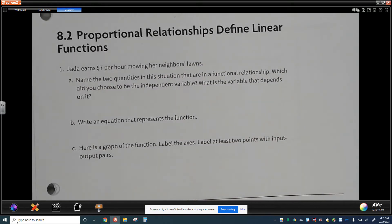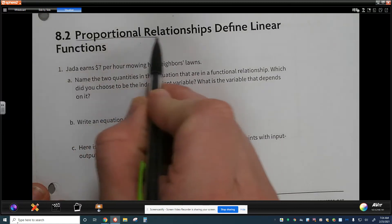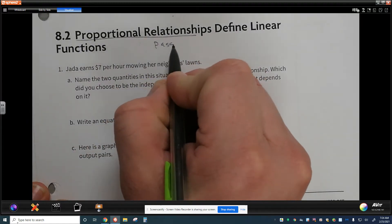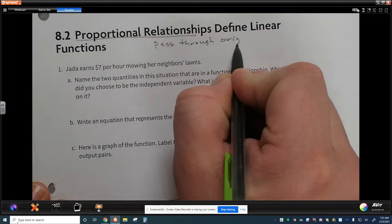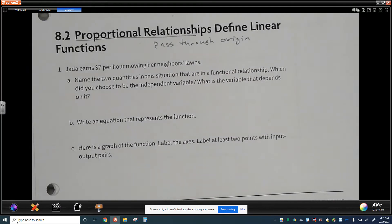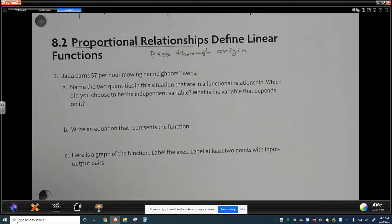8.2 is proportional relationships define linear functions. And what we're after, this is a key thing to look at, proportional relationships. So we recognize this piece that proportional relationships pass through the origin. And it's kind of cool that it says that they define linear functions. So anytime you have a proportional relationship, you have a linear equation and that linear equation will be a function. Jada earned $7 per hour mowing her neighbor's lawns. Name two quantities in this situation that are in a functional relationship. Which did you choose to be independent and which of the variables depends on it?